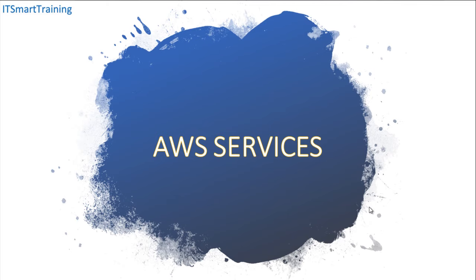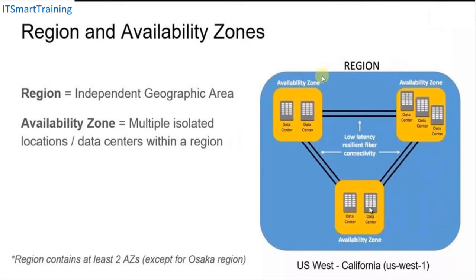A region is a geographical area. The blue area you can see in the diagram is called a Region. Every region consists of typically two or more availability zones for high availability of your applications. Here you can see there are three availability zones configured, and each availability zone is well connected with high bandwidth fiber connectivity.